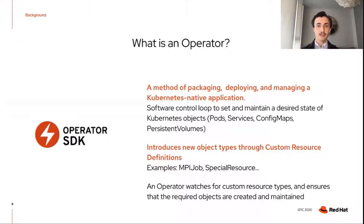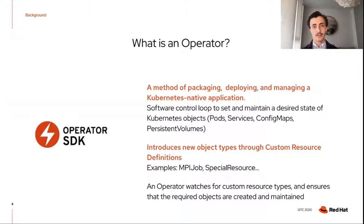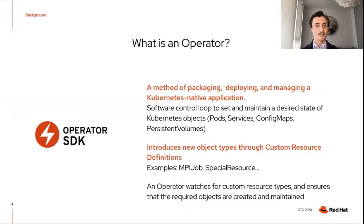An operator works as a software control loop to set and maintain a desired state of certain Kubernetes objects. For running GROMACS on OpenShift, a few existing operators really simplify the process of deploying a multi-node GPU-accelerated scientific application on Kubernetes that uses the Lustre file system for storage. The NVIDIA GPU operator means I don't have to worry about installing NVIDIA drivers in my GROMACS containers. The special resource operator helps set up the Lustre client on all worker nodes. The MPI operator makes deploying MPI applications easy — you don't need to worry about how containers will find each other and communicate with MPI.